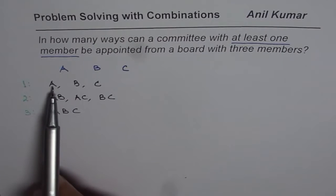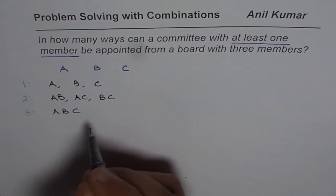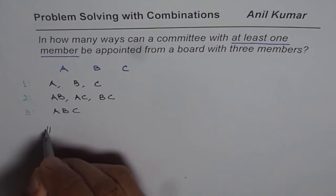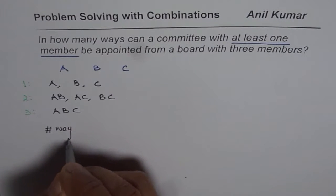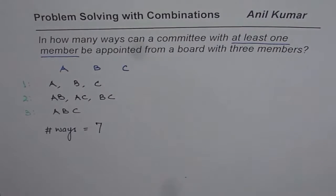So if you now count one, two, three, four, five, six and one, seven. So how many ways? So we say the number of ways is seven. So number of ways equals seven. So that is one way of doing it.